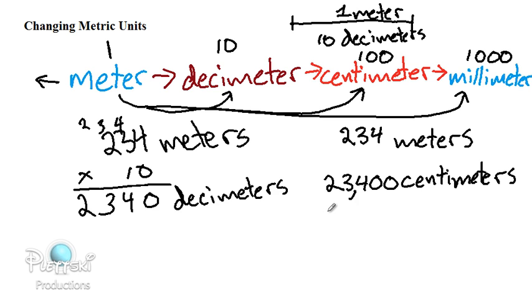Now if we wanted to convert 234 meters into millimeters, we're going to have to multiply the 234 by 1,000. Notice, when we multiplied it by 10, we just added a zero. When we multiplied it by 100, we added two zeros. When we multiply 234 times 1,000, you guessed it, we're going to add three zeros. 234 and then three zeros. So we have 234,000 millimeters.